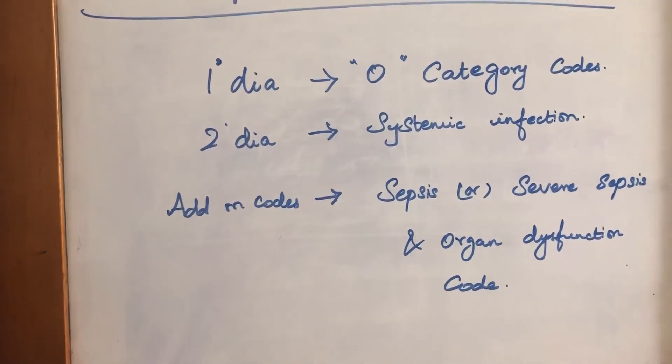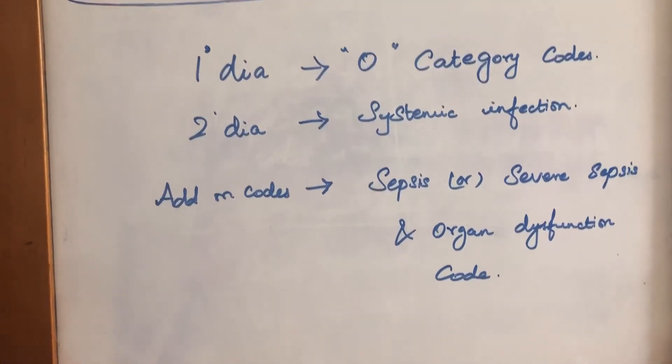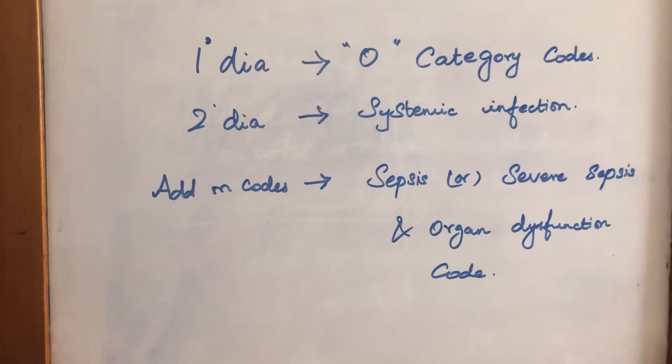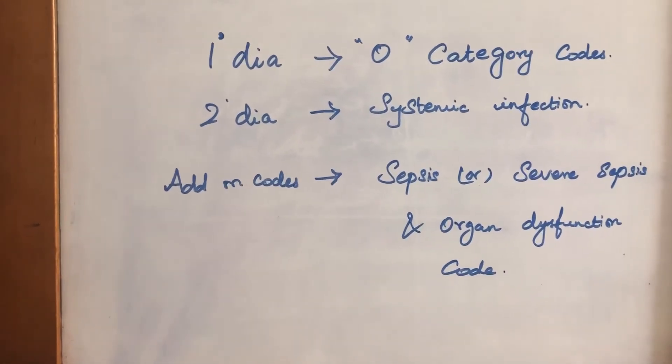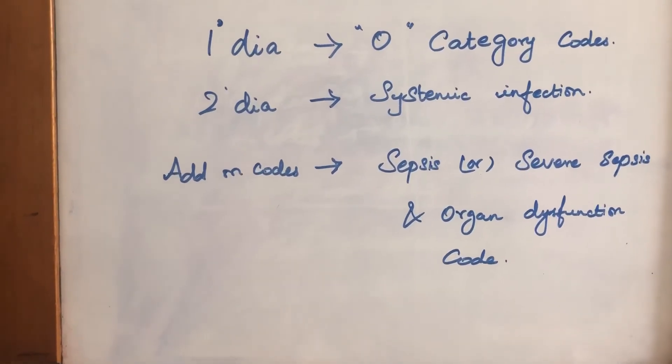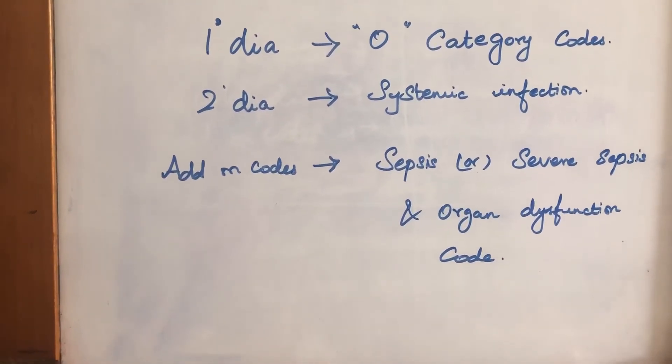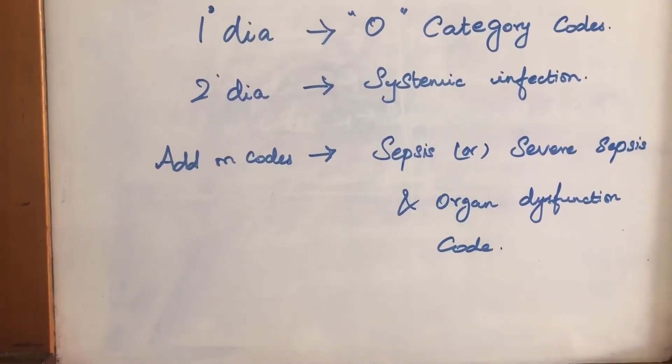Add-on codes are also available in this case: Sepsis, Severe Sepsis, and organ dysfunction codes are assigned as add-on codes.